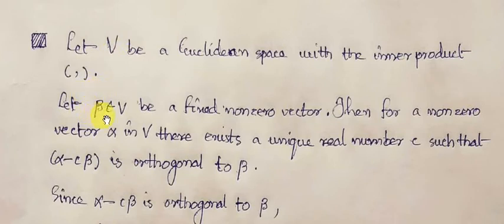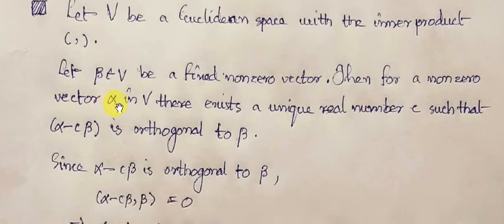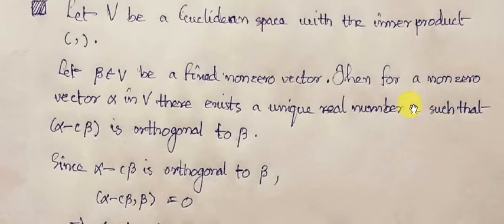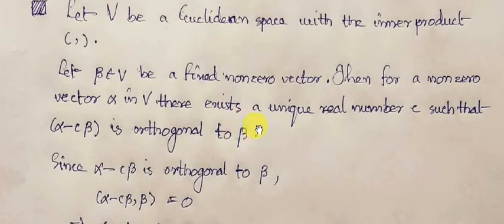If we consider any vector beta from V as a fixed vector, and any other vector alpha from this Euclidean space V, then we can find a scalar C such that the vector alpha minus C*beta will be orthogonal to this fixed vector beta.